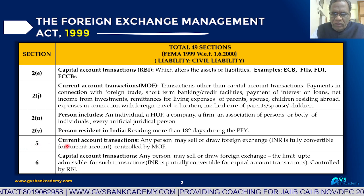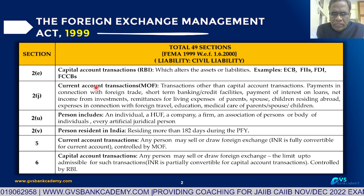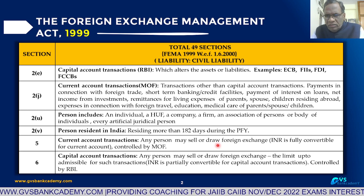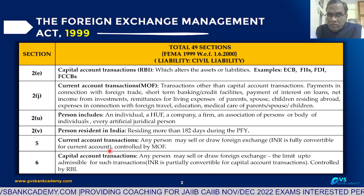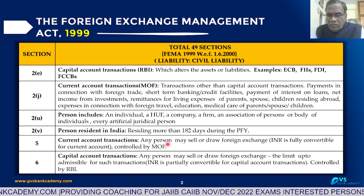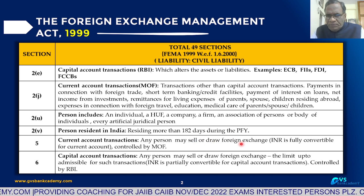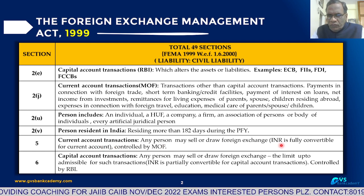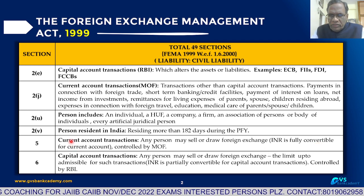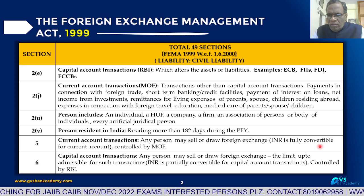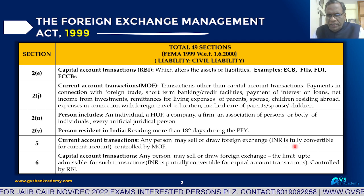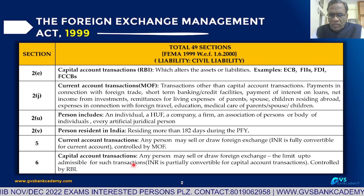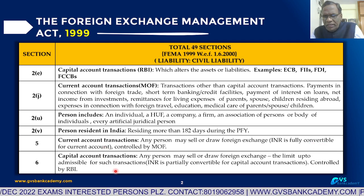Section 5 deals with Current Account Transactions. Under Current Account Transactions, any person may sell or draw foreign exchange without any limits. For Current Account Transactions, the Indian Rupee is fully convertible - there are no restrictions from the RBI side. That is why INR is called fully convertible for Current Account Transactions.